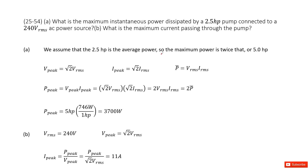We need to find the maximum power for the devices. The RMS power for the devices is 2.5 horsepower, and the RMS voltage is 240 volts.